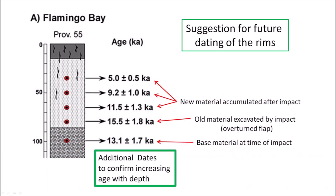Dating cores taken from the rims of the Carolina Bays is the most logical way of determining the age of the bays, because the procedure takes into consideration the mechanism of crater formation, which includes the creation of overturned flaps on top of the bay terrain at the time of the impact. One suggestion for future dating is to take additional samples below the base layer to confirm an increase of age with depth. It is also important to consider that many bays overlap each other, so the most accurate dates would be obtained from bays that were in place first. The law of superposition should be used as a guide.